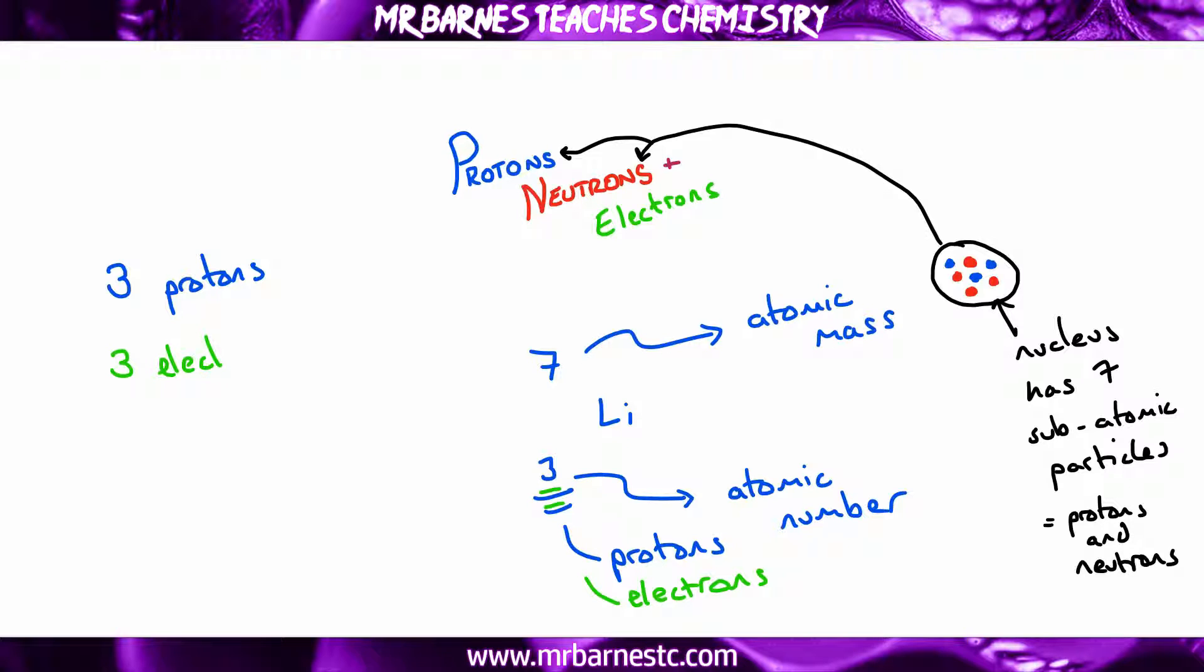So the very first thing you do if you're asked how to work out the protons, neutrons, and electrons, is you can say that both protons and electrons are the small, or the bottom, number.